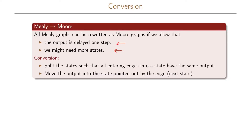In the conversion we split the states such that all entering edges into a state have the same output. This situation we already had for our parity check example, so we didn't need to do this first step in the conversion. In the second step we move the output into the state pointed to by the edge.